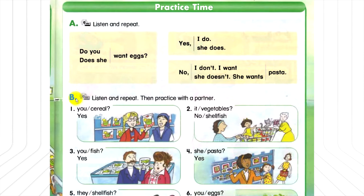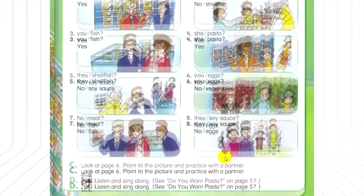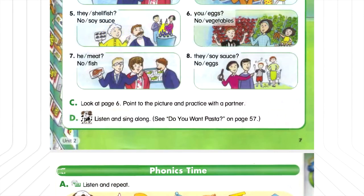B. Listen and repeat, then practice with a partner. Number 1: Do you want cereal? Yes, I do. Number 2: Does it want vegetables? No, it doesn't. It wants shellfish. Number 3: Do you want fish? Yes, I do. Number 4: Does she want pasta? Yes, she does. Number 5: Do they want shellfish? No, they don't. They want soy sauce. Number 6: Do you want eggs? No, we don't. We want vegetables.